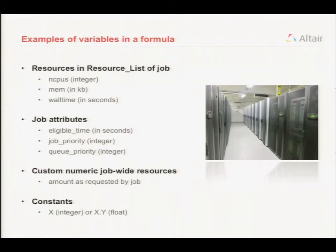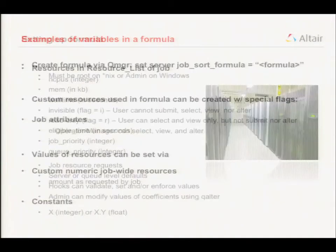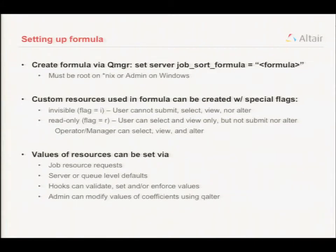Job attributes include eligible time, job priority, and queue priority. Job priority is requested by the user or set by default on a queue, so be careful about using that too frequently. Custom resources are where the admin-settable priority comes in — we'll talk about that. And then constants, either integer or floating point.